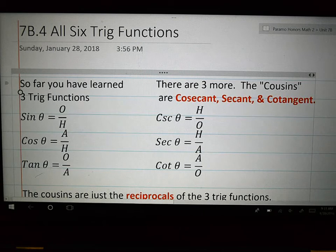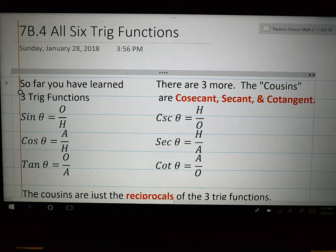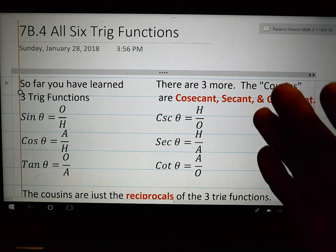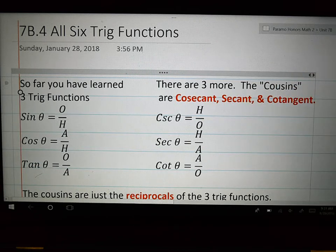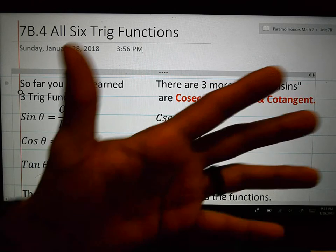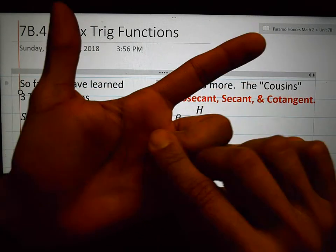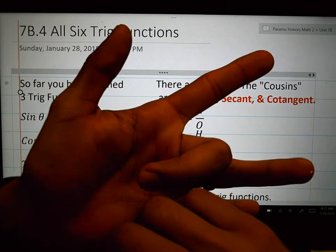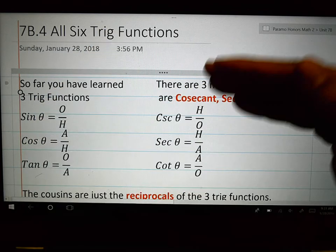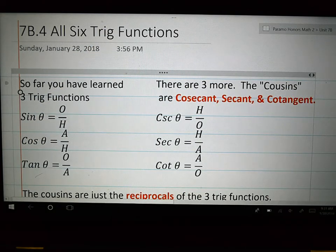All you're doing is taking things that were root 3 over 2 and instead of root 3 over 2, you're now doing 2 over root 3 and then you rationalize it. So instead of us dealing with, if we're using the hand, instead of root 2 over 2, now we're 2 over root 2, depending on which trig function we're talking about.